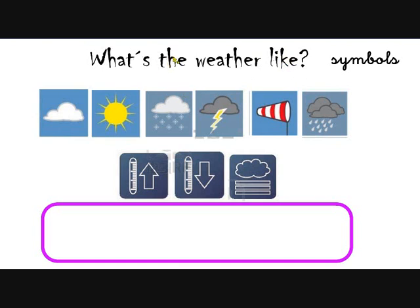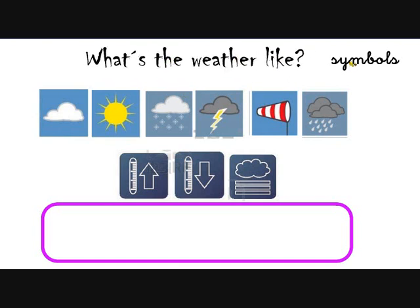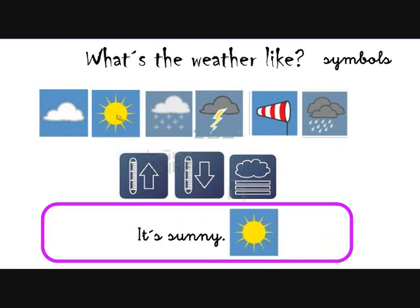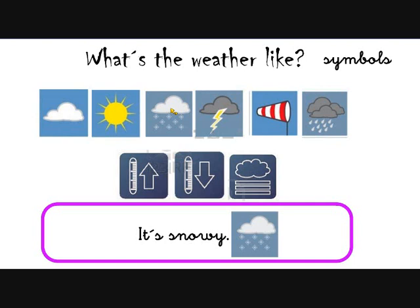To talk about the weather we use symbols. Symbols like this cloud. What is the meaning of this cloud when we talk about the weather? It means it's cloudy, of course. When we use the symbol of the sun, we mean it's sunny. The same thing with this — a cloud and some snow falling from the clouds — so it is snowy, of course.